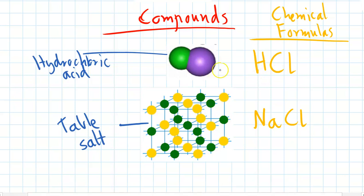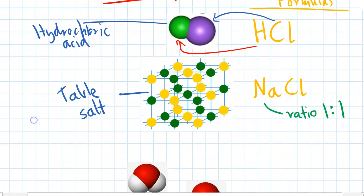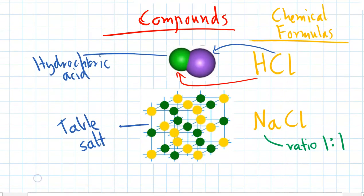So you can see in a molecule, the chemical formula is telling us exactly how many atoms are in each molecule. There's one hydrogen and one chlorine. In a lattice compound, it's telling us the ratio. Because remember, lattices go on for trillions and trillions and trillions of atoms. But the chemical formula here is telling us that our ratio of sodium to chlorine is one to one. For every sodium atom, there is a chlorine atom.